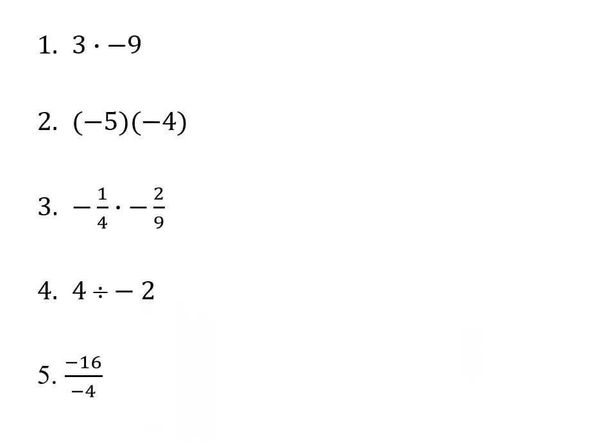Let's do some multiplication and division. The first one says three times negative nine. We have two numbers with opposite signs, so the answer is always negative. Nine times three makes twenty-seven, so the answer is negative twenty-seven. On number two, negative five times negative four — both negative signs — so the answer is positive. Five times four gives me positive twenty. The two negatives basically end up canceling.